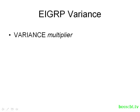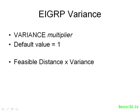The command we're going to use is the variance command, and it has a single parameter known as the multiplier — a numeric value. By default, the multiplier has a value of one. The way it works is we take the feasible distance, in other words the metric of the best EIGRP route, and we multiply it by the variance. The rule is, any feasible successor has to be less than or equal to that new value in order to be considered a candidate for load balancing.